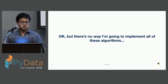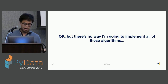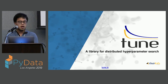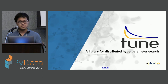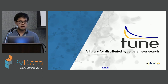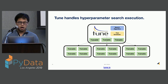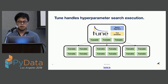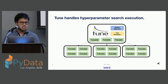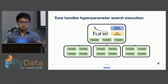You might be thinking there's no way you'd actually implement all these algorithms. That's where TUNE comes in — a distributed hyperparameter search library from the RISE lab that provides an easy-to-use interface for all of these algorithms. TUNE is joint work of many faculty members, graduate students, and undergraduates at UC Berkeley. It specifically handles the execution of hyperparameter search, providing hooks to plug into different search algorithms while automatically handling parallelism. You don't need to change your code whether running on your laptop, a big multi-GPU machine, or across a cluster.